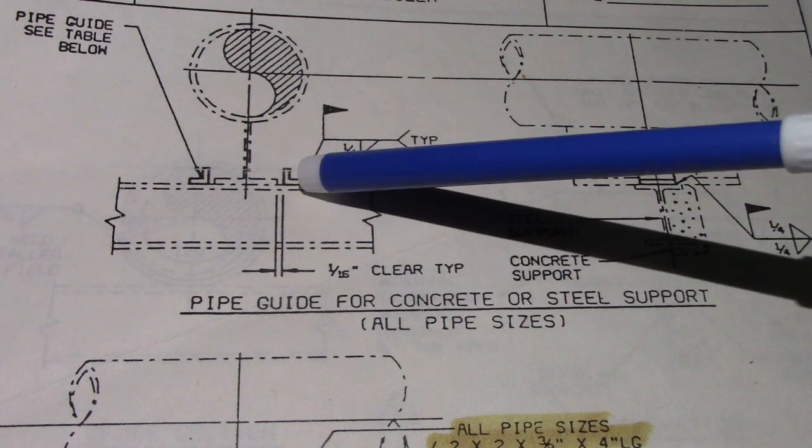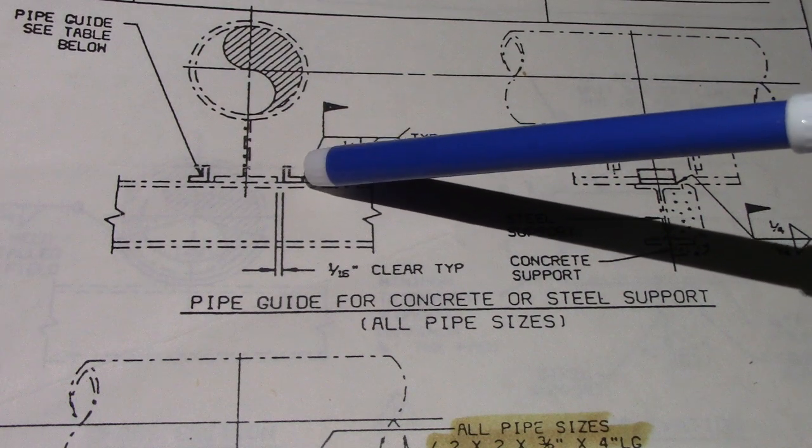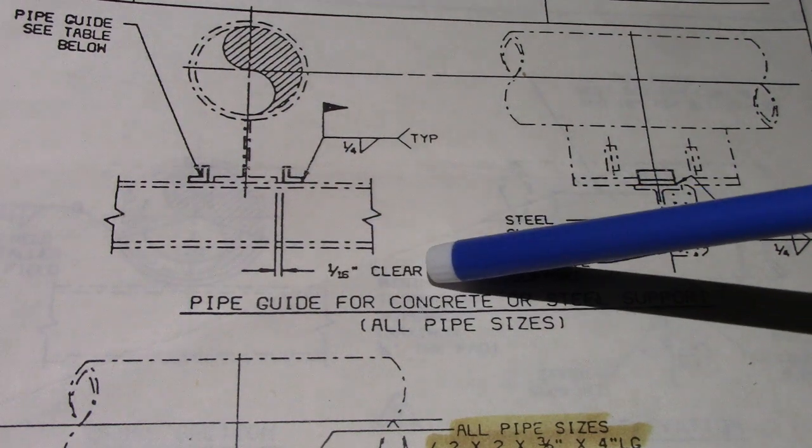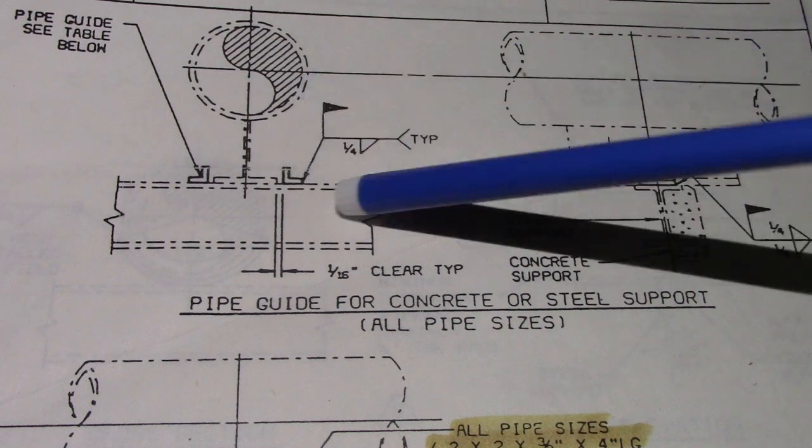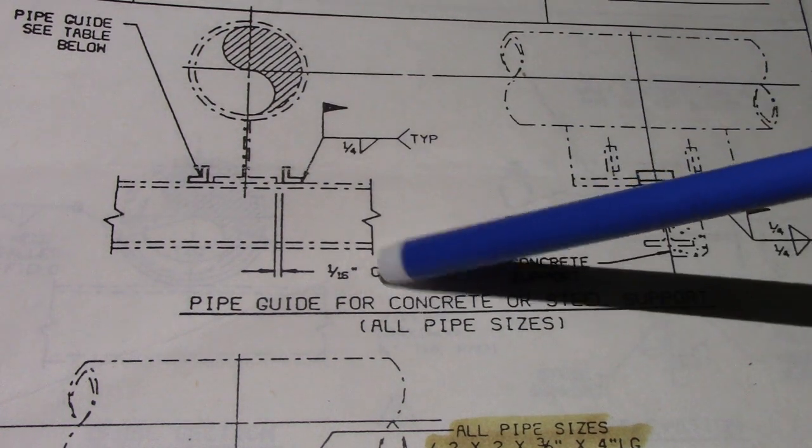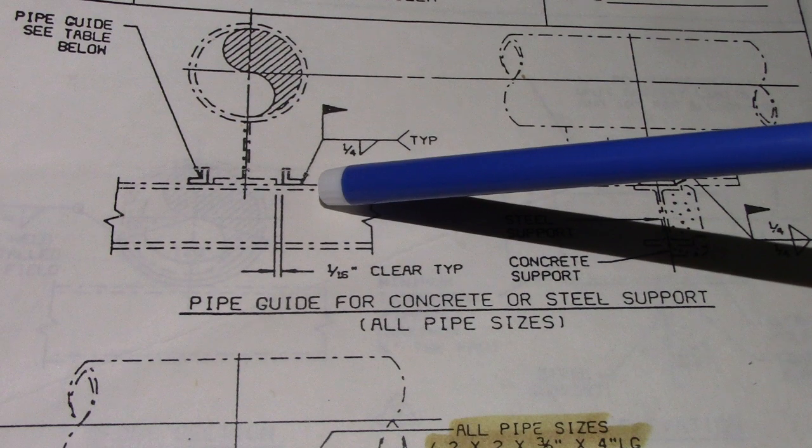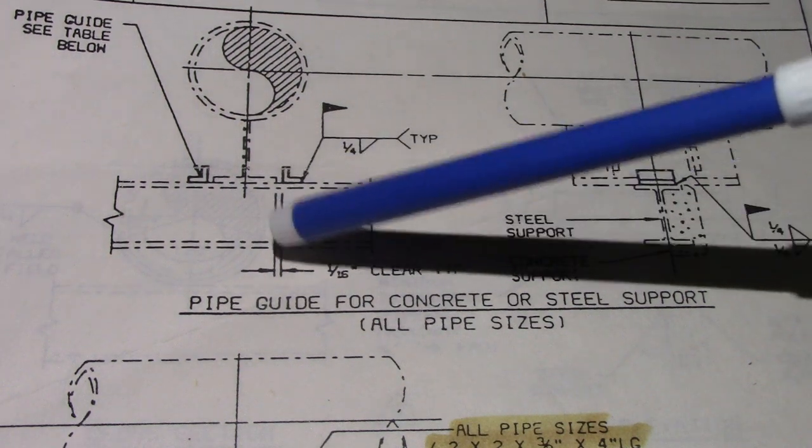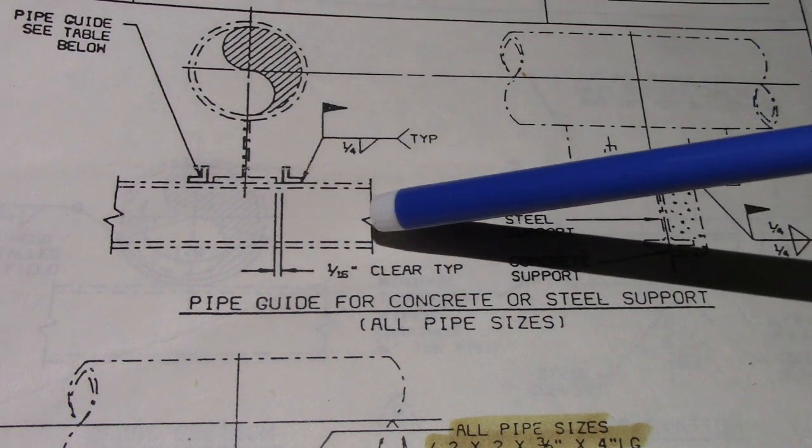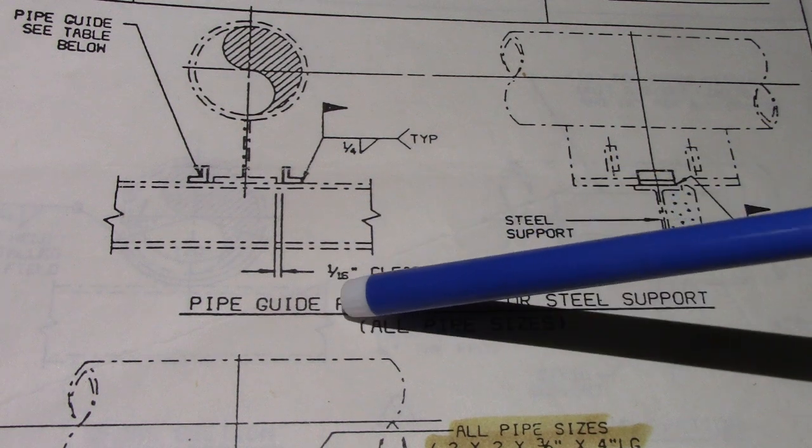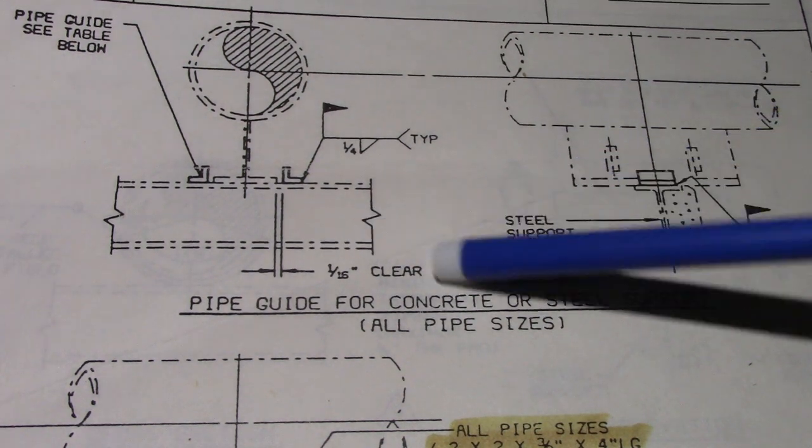They have a clearance for this pipe guide. If you are installing this pipe guide, check what clearance to be used on this pipe shoe. This is very important to be checked - the clearance of this pipe guide. They're using 3/16 inch.